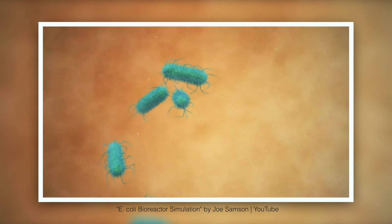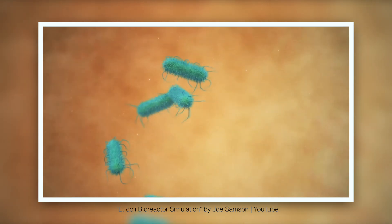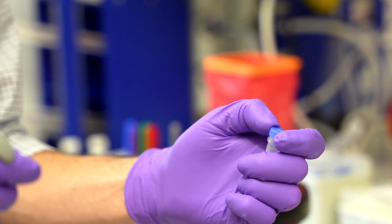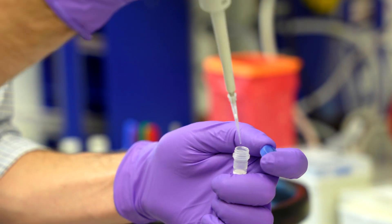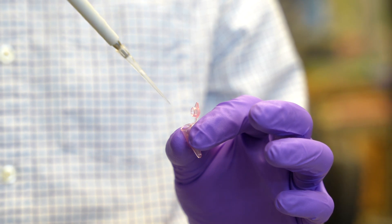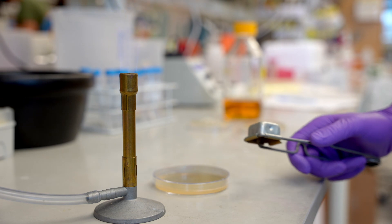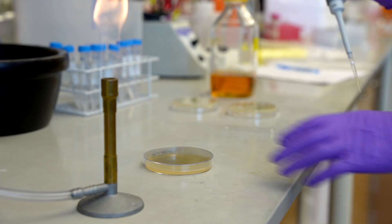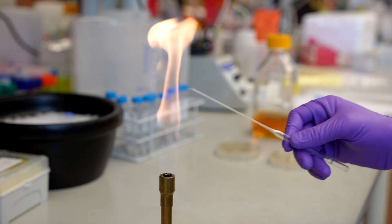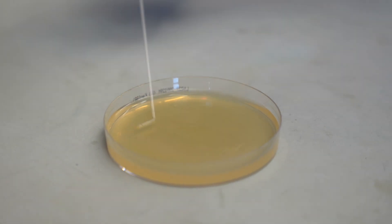The cells we use — bacteria and yeast — don't know the difference between their own DNA and the DNA that was made in the lab. To physically put the new DNA molecules into the living cells, we simply mix the DNA and the cells in a test tube. Then we use heat or sometimes electricity to shock the cells in a way that temporarily causes them to absorb the DNA from their surroundings. Now we plate the cells on a petri dish that contains a nutrient-rich agar, which is kind of like a starchy jello made from seaweed. The cells love it and will begin to grow.